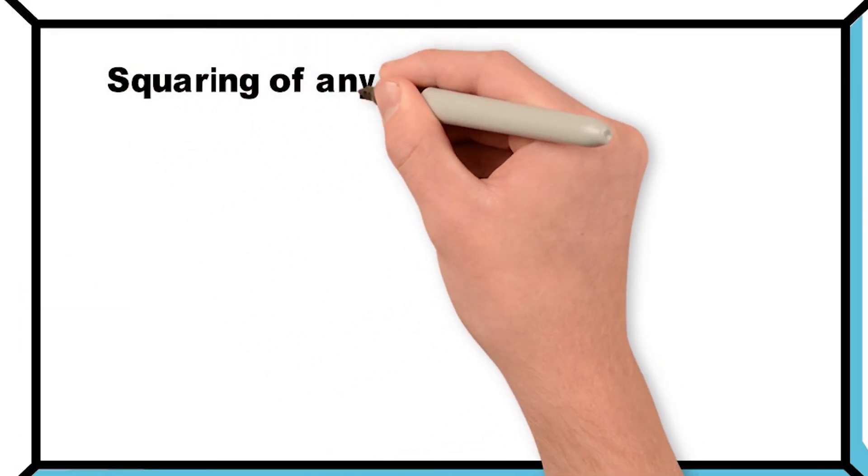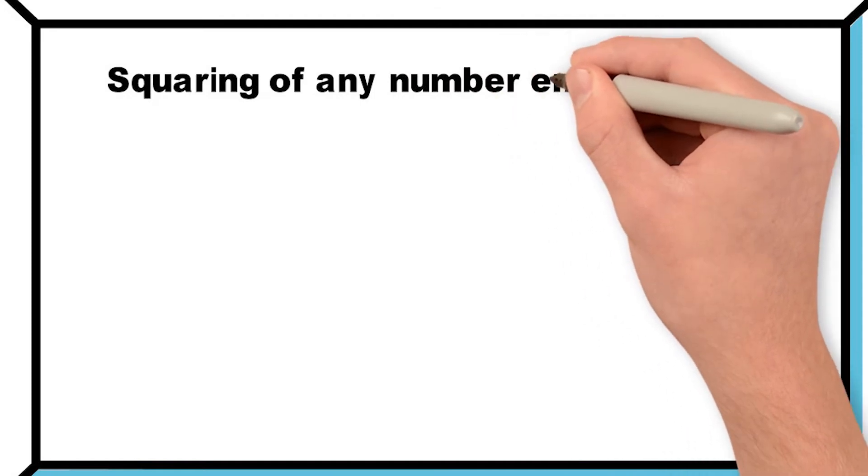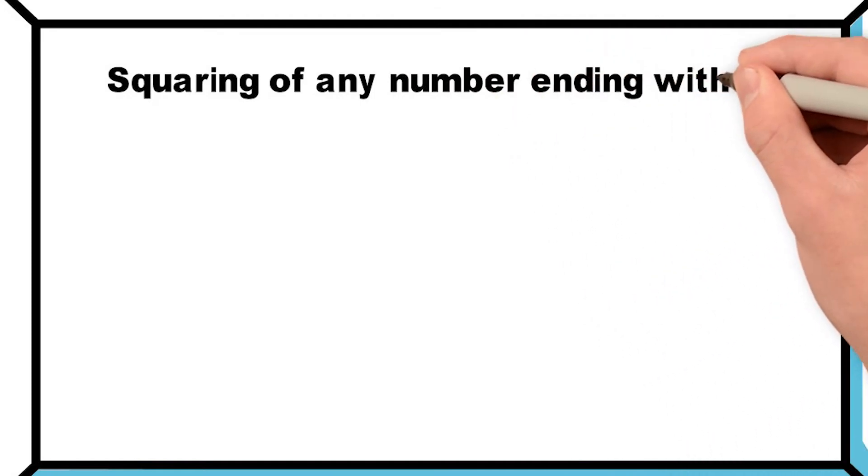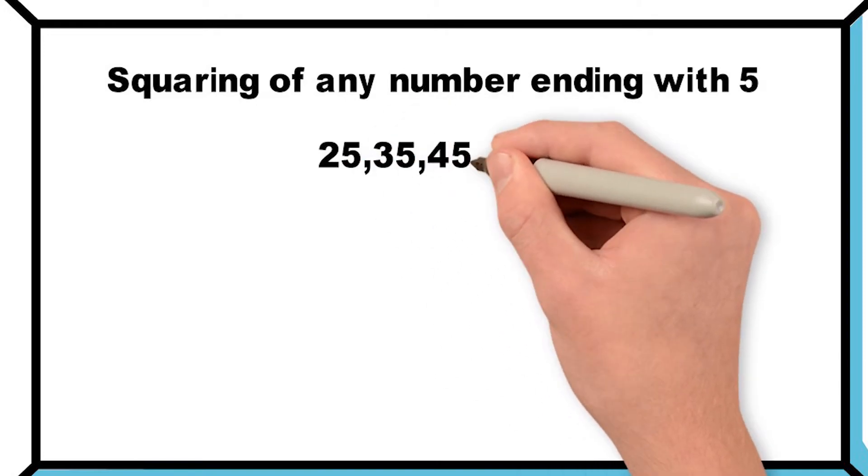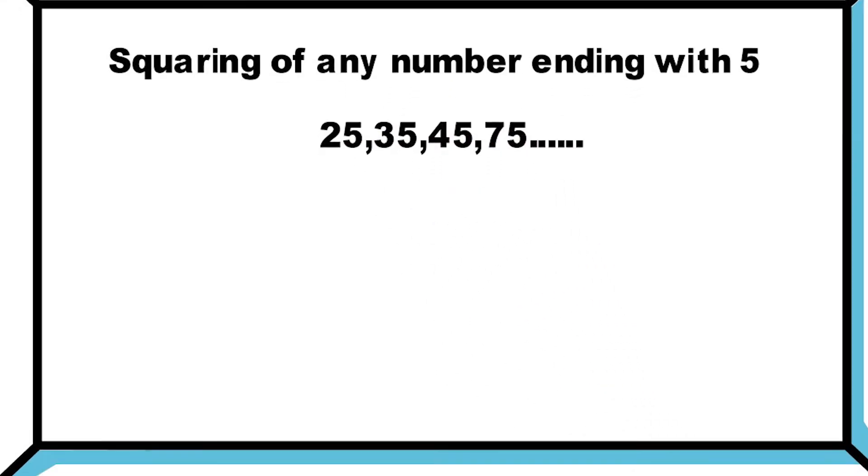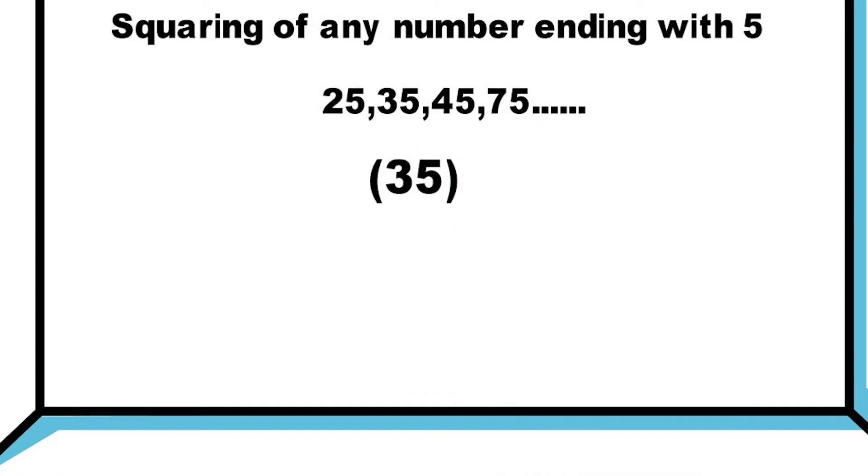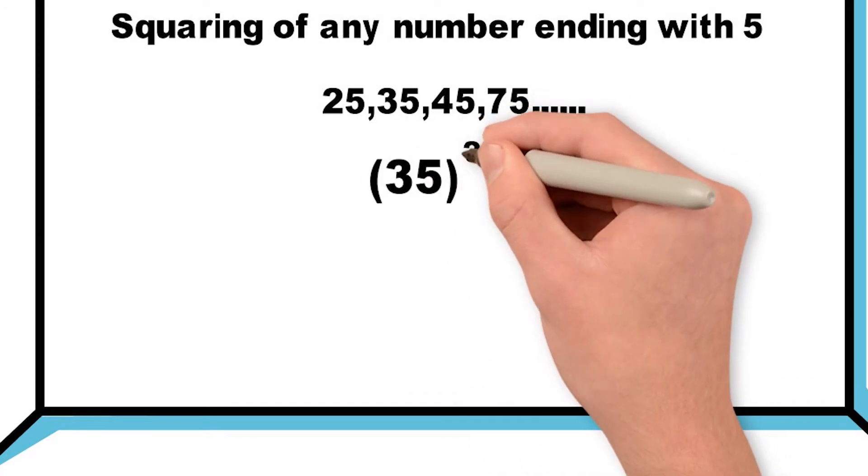Now we will solve squaring of any number ending with 5, like 25, 35, 45, 75, and so on. Let's take an example: 35 whole square.